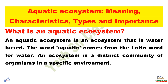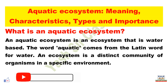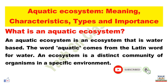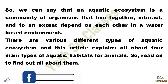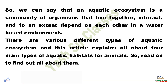What is an aquatic ecosystem? An aquatic ecosystem is an ecosystem that is water-based. The word aquatic comes from the Latin word for water. An ecosystem is a community of organisms in a specific environment. So we can say that an aquatic ecosystem is a community of organisms that live together, interact, and to an extent depend on each other in a water-based environment.